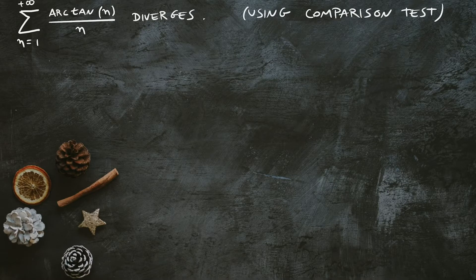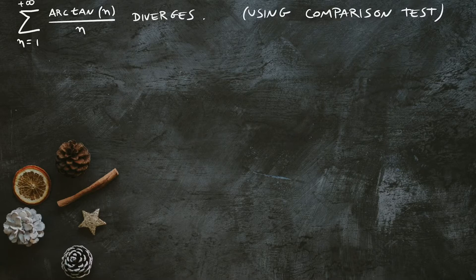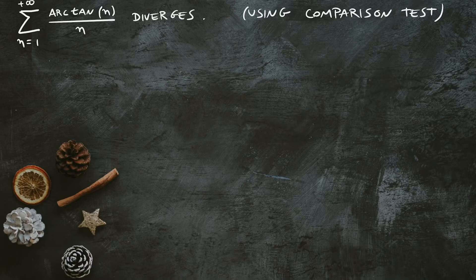The comparison test says suppose that Σa_n and Σb_n are series with positive terms. If Σb_n is convergent and a_n ≤ b_n for all n, then Σa_n is also convergent.